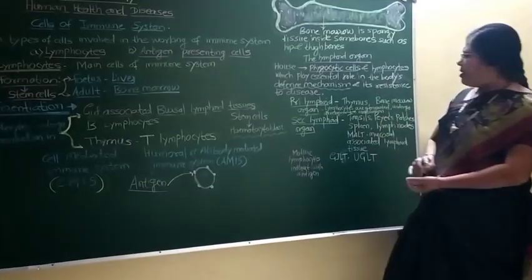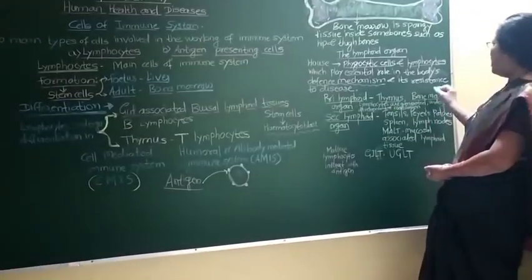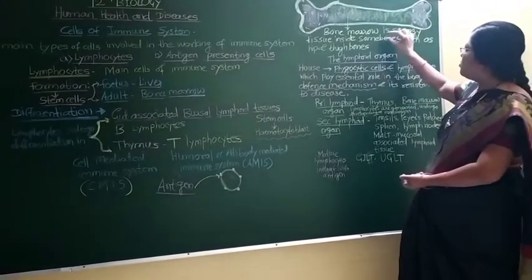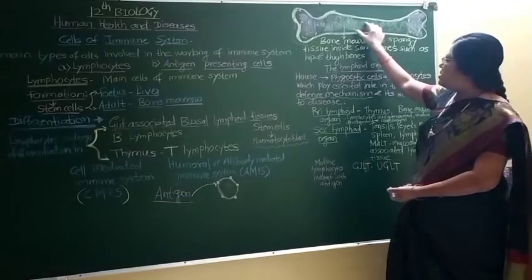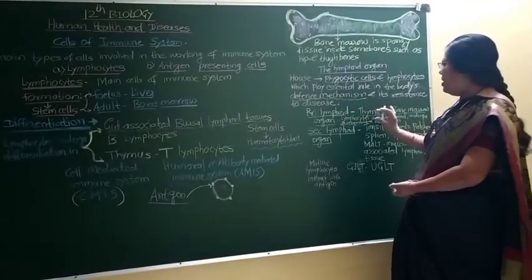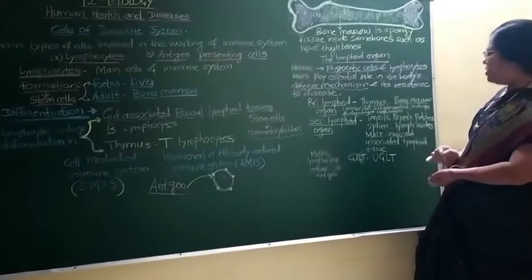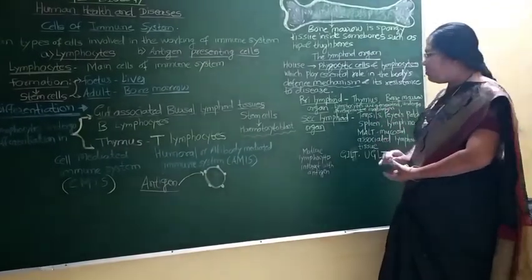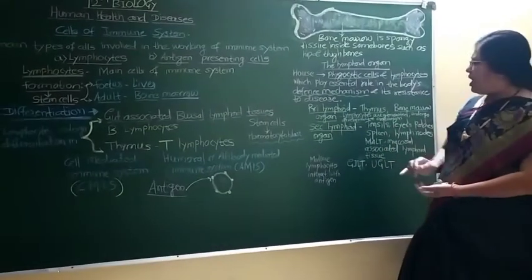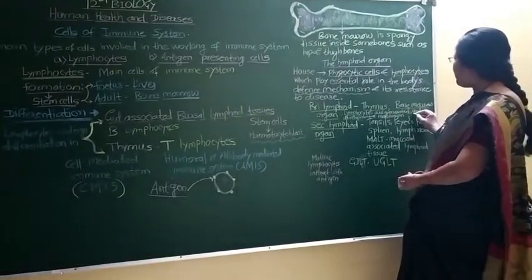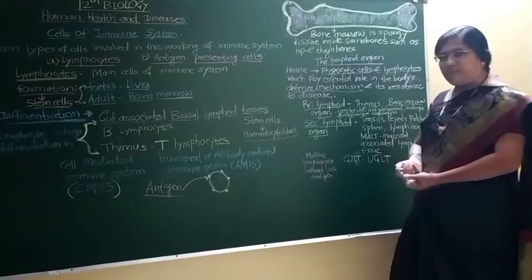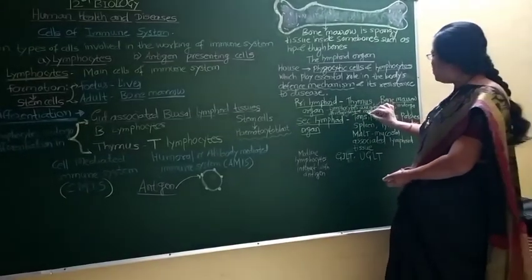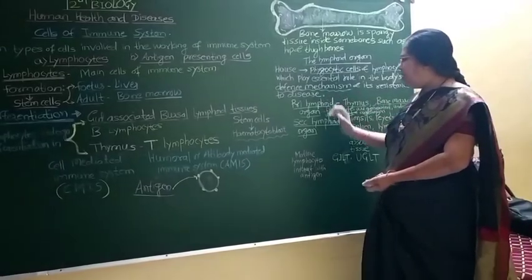The primary lymphoid organs are the thymus, which is a gland, and the bone marrow, which is a spongy tissue present inside some bones. In the primary lymphoid organs, lymphocytes are generated and undergo development and maturation.